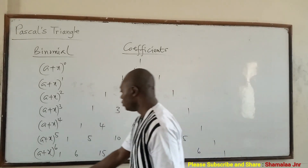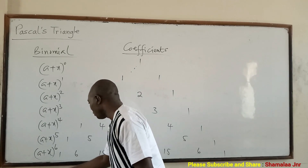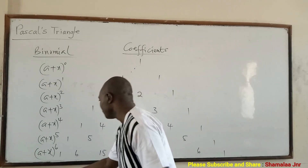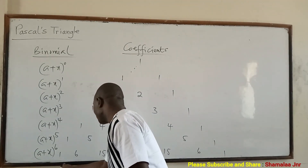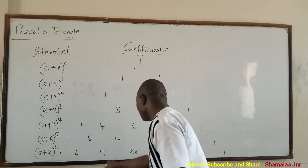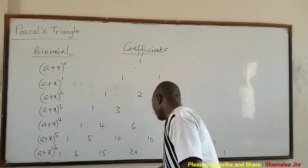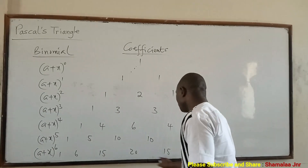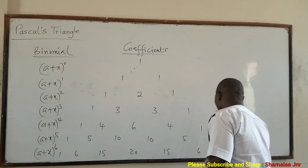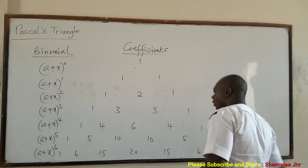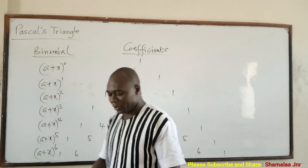So if you want to continue — for example (e + x) raised to the power 7 — write 1, then 1 plus 6 is 7, then 21, then 35 at the middle, then 35, then 21, then 7, and then 1. And then it continues in that way. So this is Pascal's triangle.